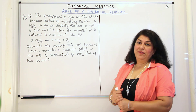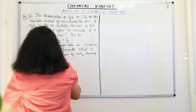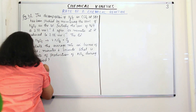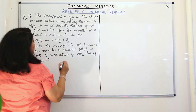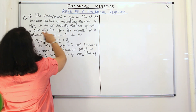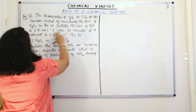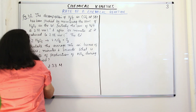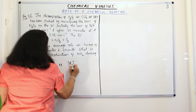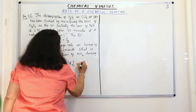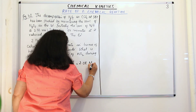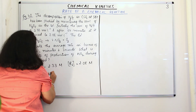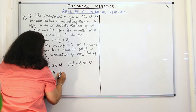Now let me write what we have been given. For the reactant N2O5, the initial concentration R1 was 2.33 moles per liter (molarity M). And R2 is also given, which is equal to 2.08 moles per liter. And delta T is given to us, which is 184 minutes.